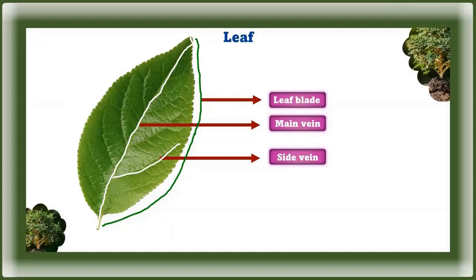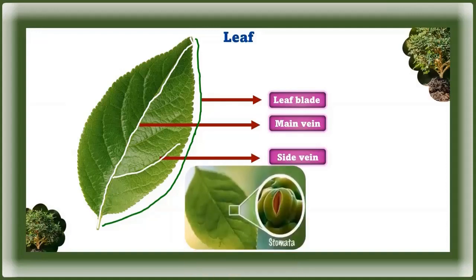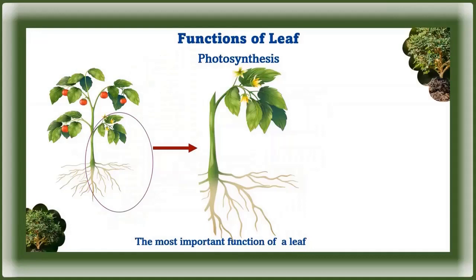Water is carried to the leaf through these veins. The lower side of a leaf has many tiny holes through which plants breathe — these holes are called stomata. Air enters the leaf through the stomata.